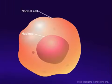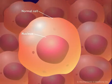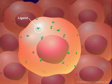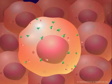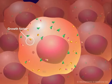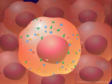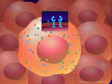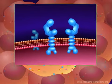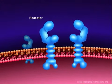Normal cells require signals, usually delivered by ligands, to stimulate their growth and to tell them when to stop growing. These signals or ligands can be in the form of growth factors and inhibitors, extracellular matrix components, or cell adhesion molecules. These signals are transmitted into the cell through proteins found on the surface of cells called receptors. Each ligand binds to its own specific receptor.